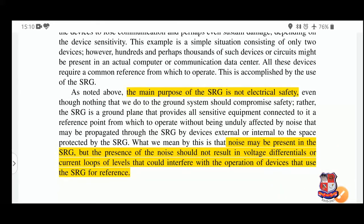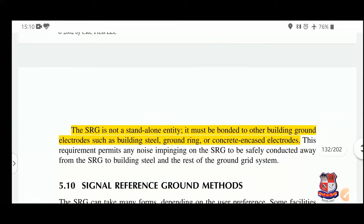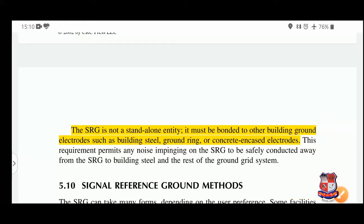The benefit of keeping the SRG as a low-impedance level is that it will contain the noise within itself and not transfer it to the communication devices — sending and receiving. The SRG is not a standalone entity. It must be bonded to other building ground electrodes such as building steel, ground ring, or concrete-encased electrodes. This requirement permits any noise impinging on the SRG to be safely conducted away to the building steel and the rest of the ground ring system.